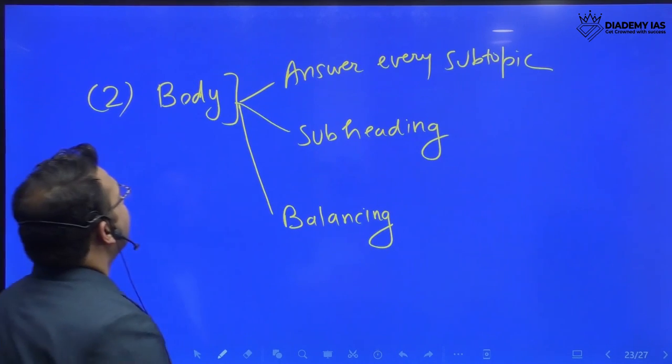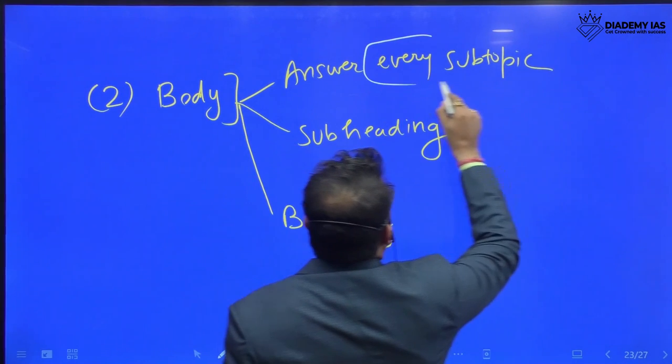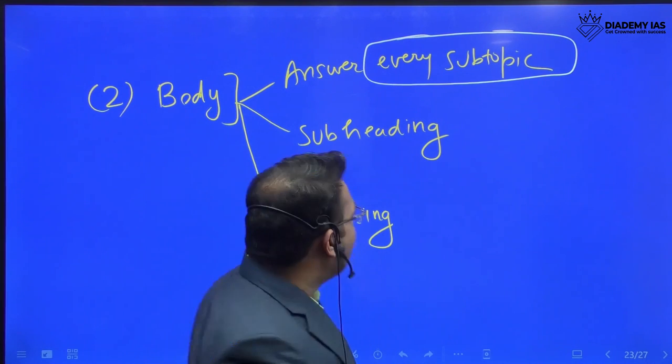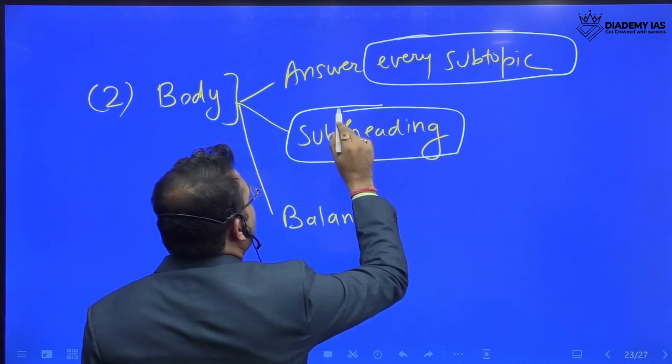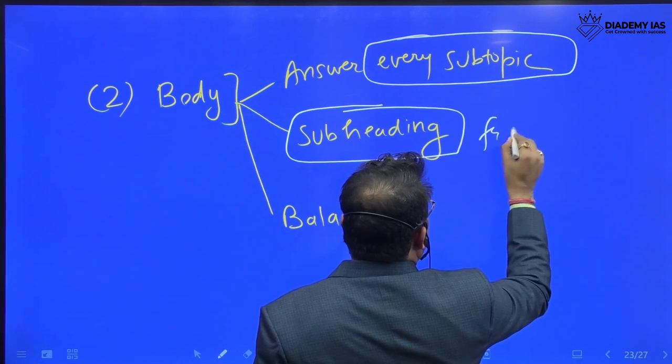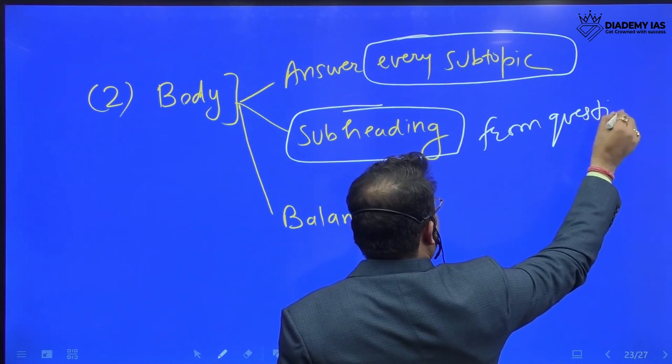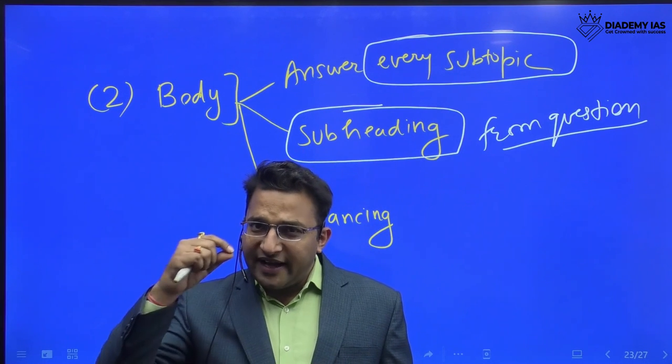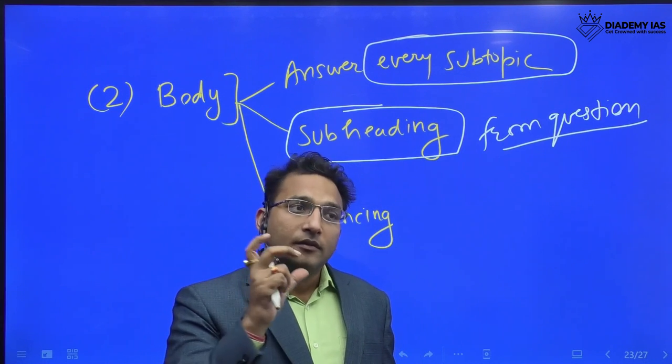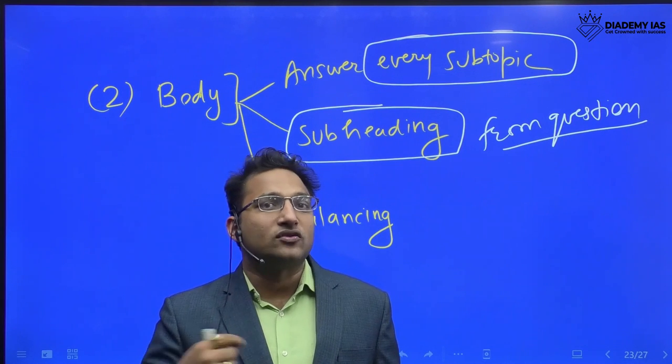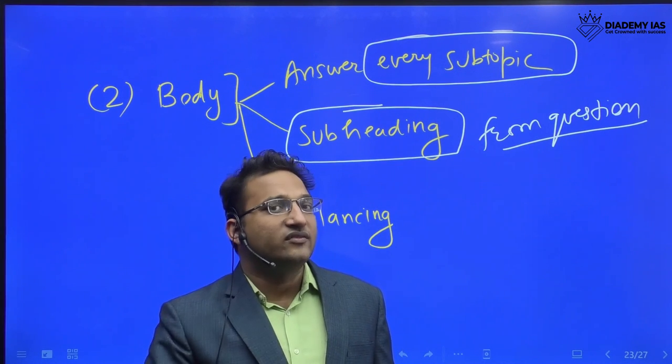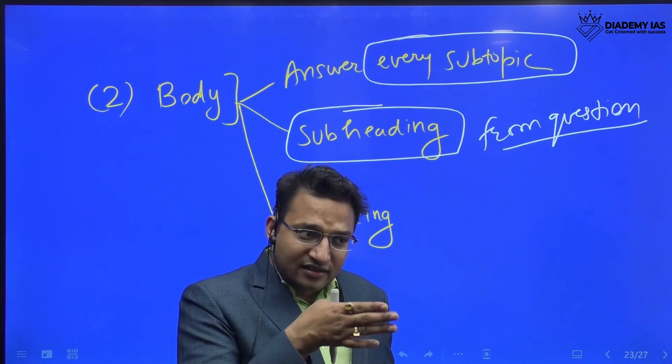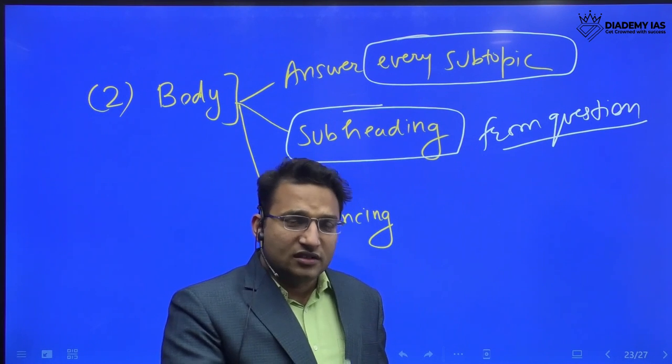Second, body. In the body, please answer every subtopic. Every question has two or three subtopics. You should identify every subtopic and you should write the subheading for every subtopic separately. The subheading words should be taken from the question. For example, if they're asking disadvantage and advantage, then you should write disadvantage and advantage. If they're asking problems and solutions, you should write the words problems and solutions - the same words given in the question itself so that the examiner can identify that this particular area of the answer is talking about this particular subtopic.